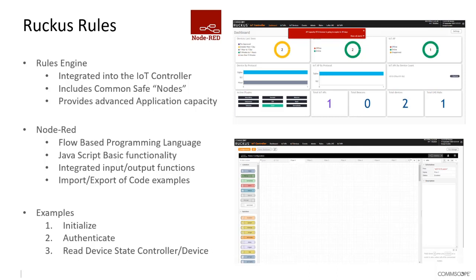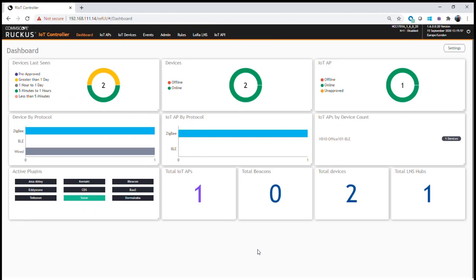Within this module, we're going to go through three main examples. First, we'll do an initialization and all the authentication required, and then we'll read a device state from the device and from the IoT controller. We'll be doing a number of different API function reads, just as we did from the command line, but now within the flow-based programming rules.